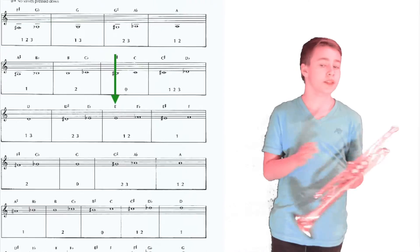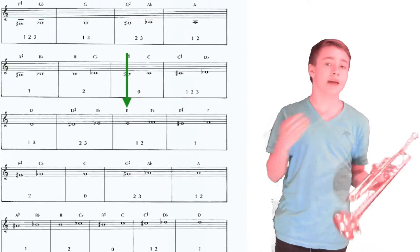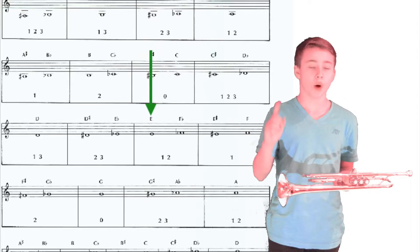Next we have note E. For this note, slightly tighten your lips and blow a little harder while you push down valves 1 and 2.